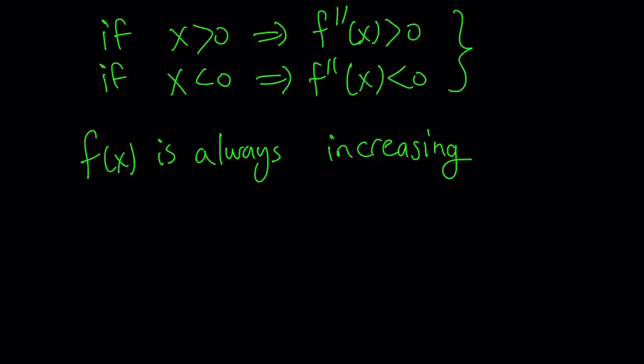So once we establish that f(x) is always increasing, we can say that there's only one root, because a function that is always increasing, and obviously it's defined from negative infinity to positive infinity over the set of real numbers, the domain and the range are both real numbers, so it's going to pretty much cover the whole coordinate plane, so it has to intersect the x-axis.